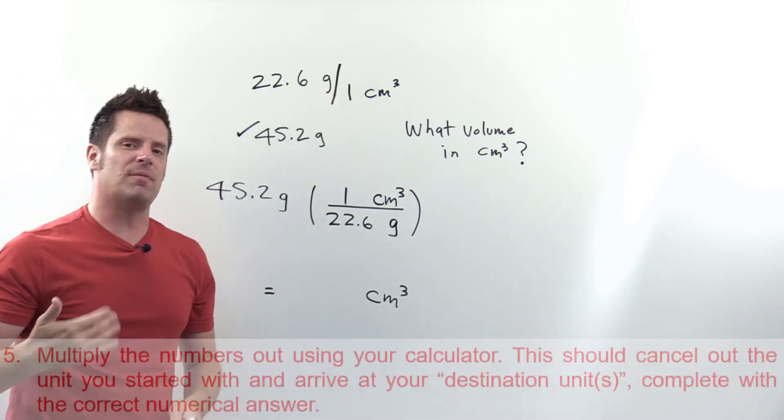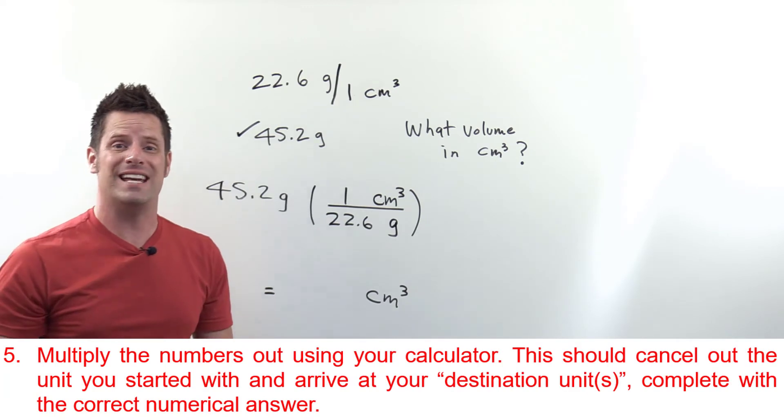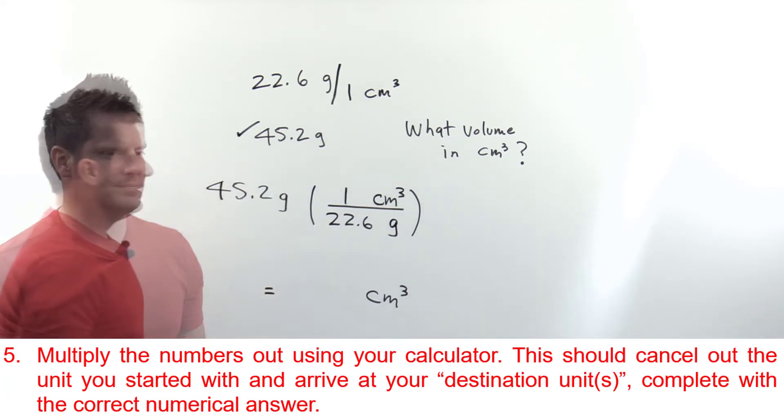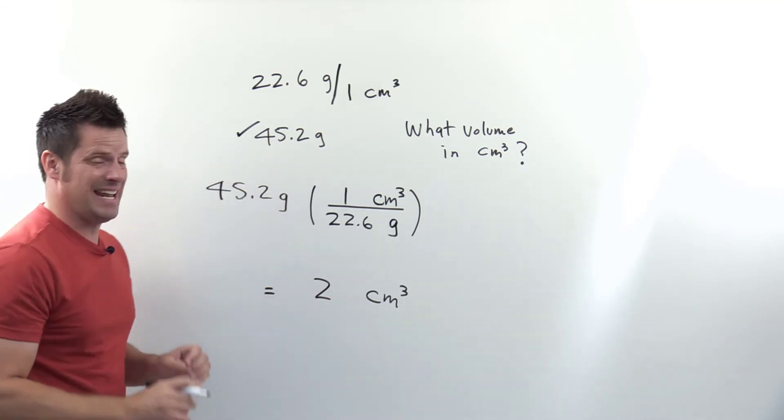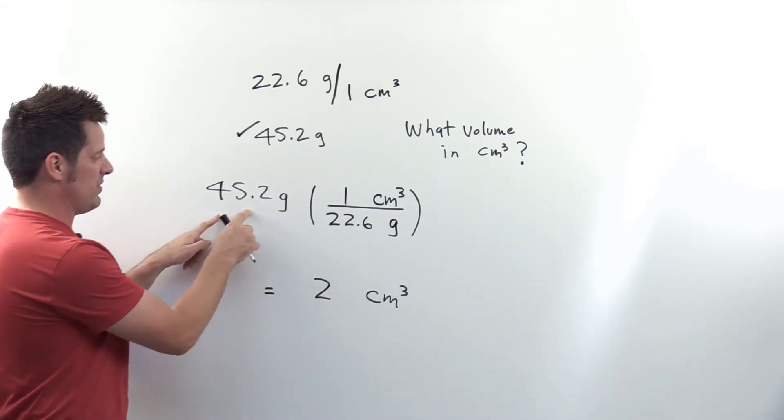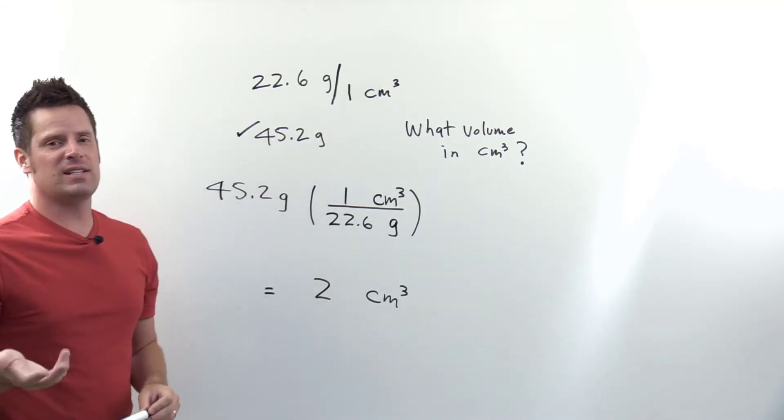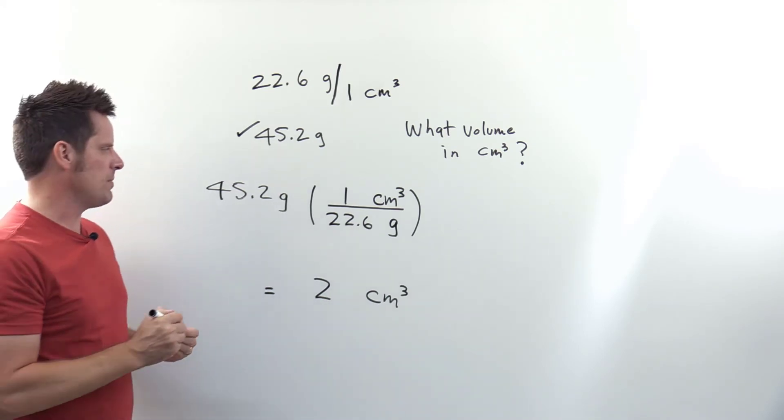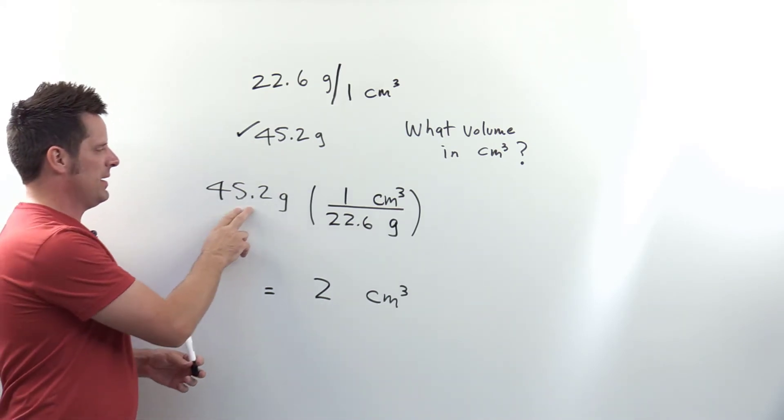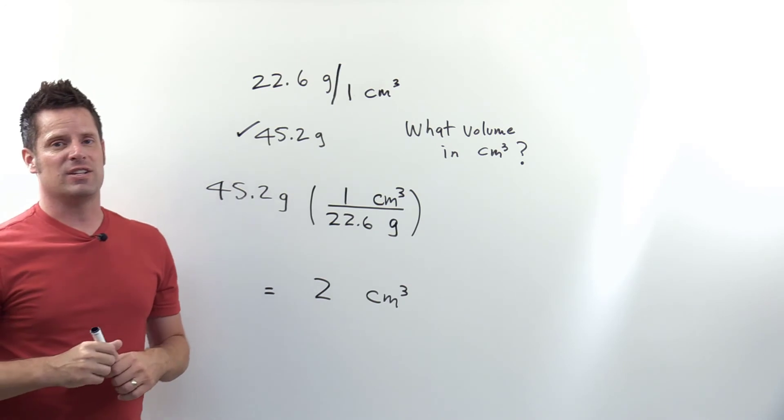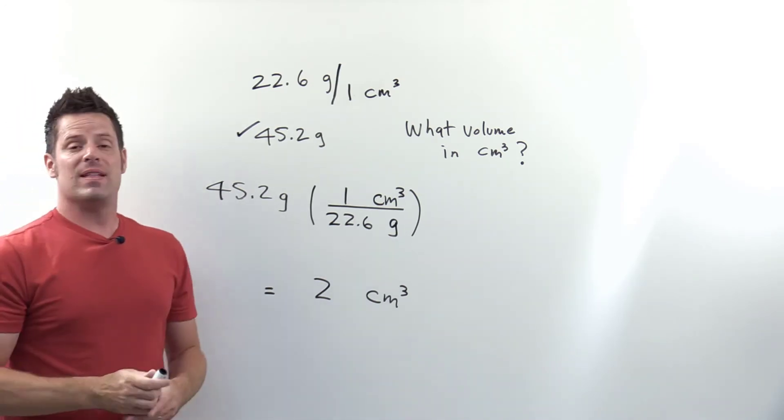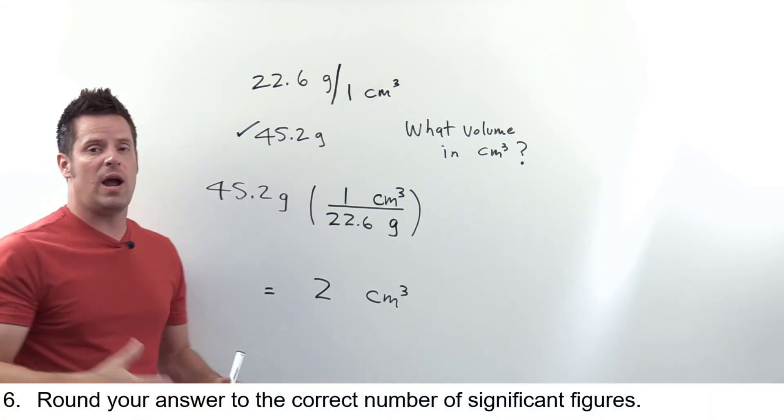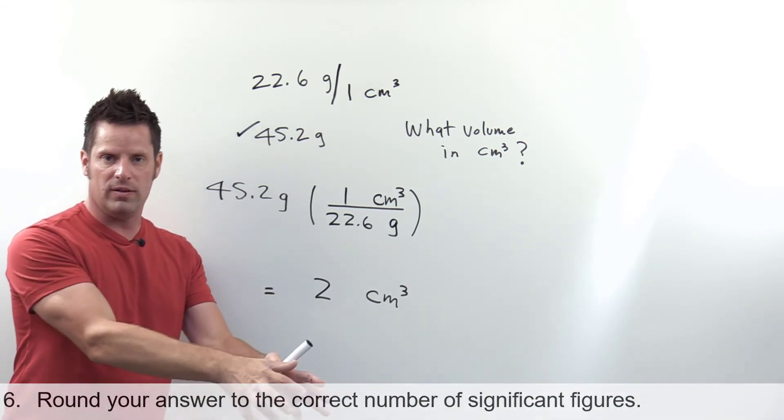Step five is multiply this out on your calculator, which I did earlier and conveniently found that the answer is exactly two. 45.2 divided by 22.6. It's kind of cool to me because I sort of made this problem up myself and I picked this number out of the air and it turned out to be an exact whole number answer.